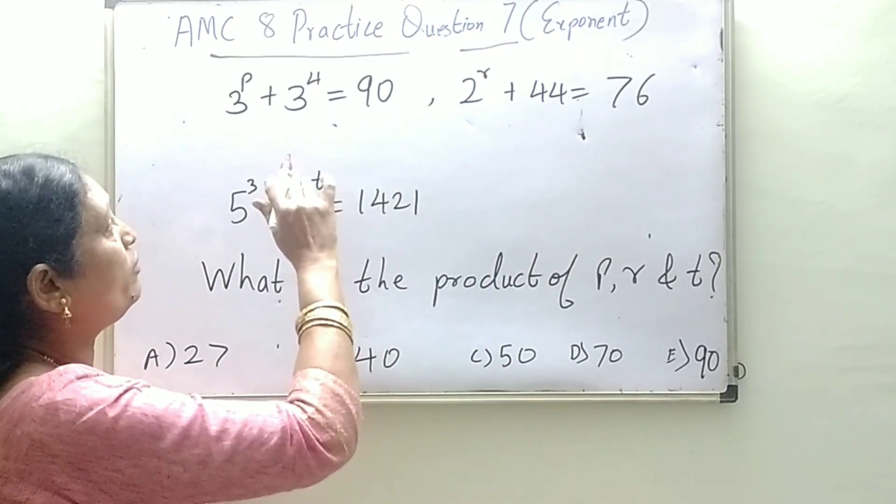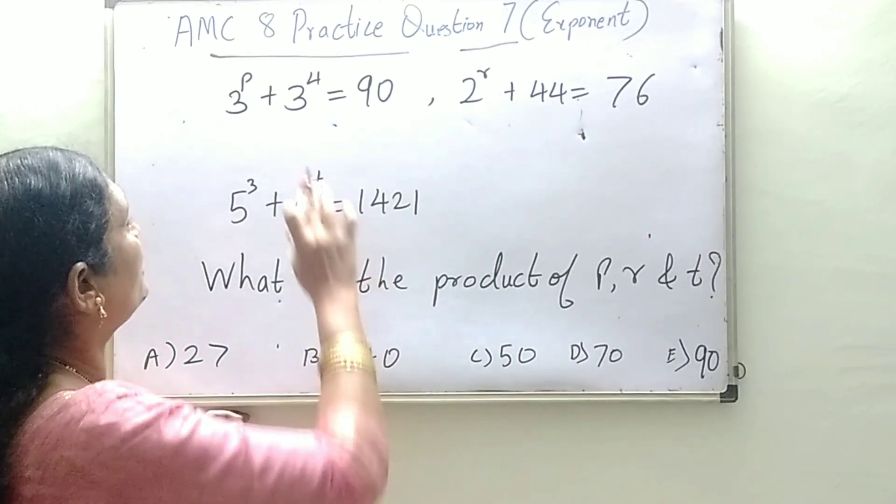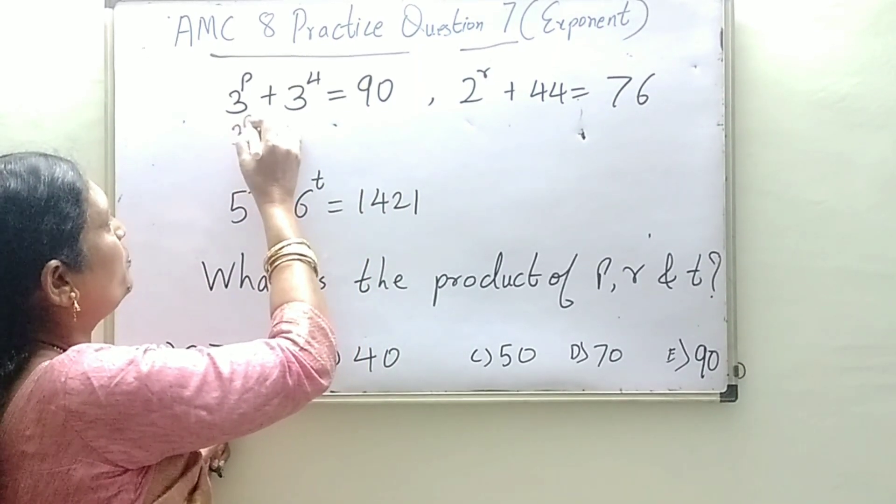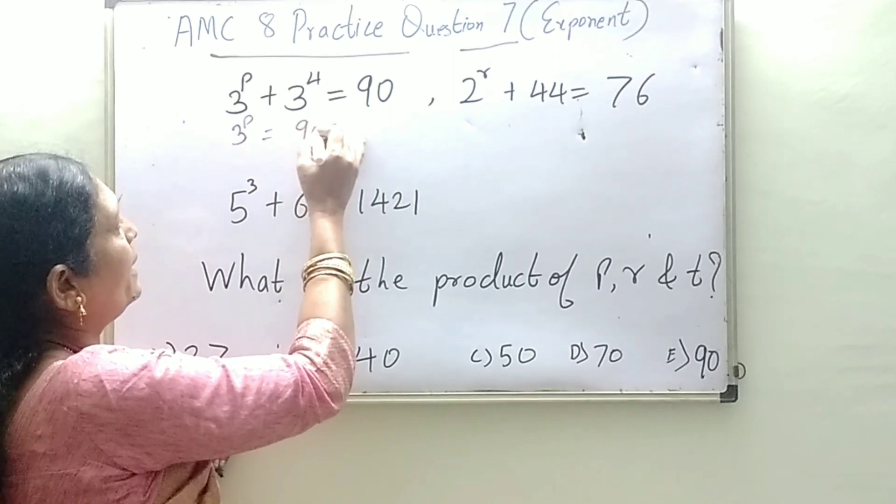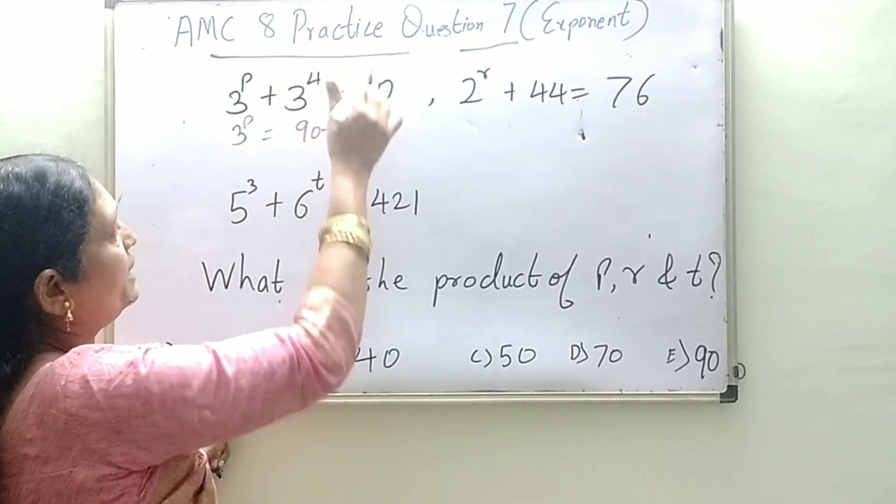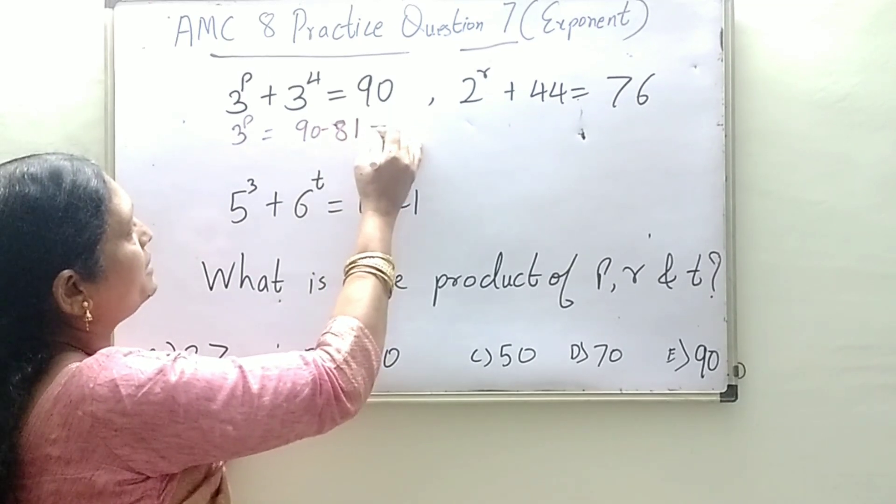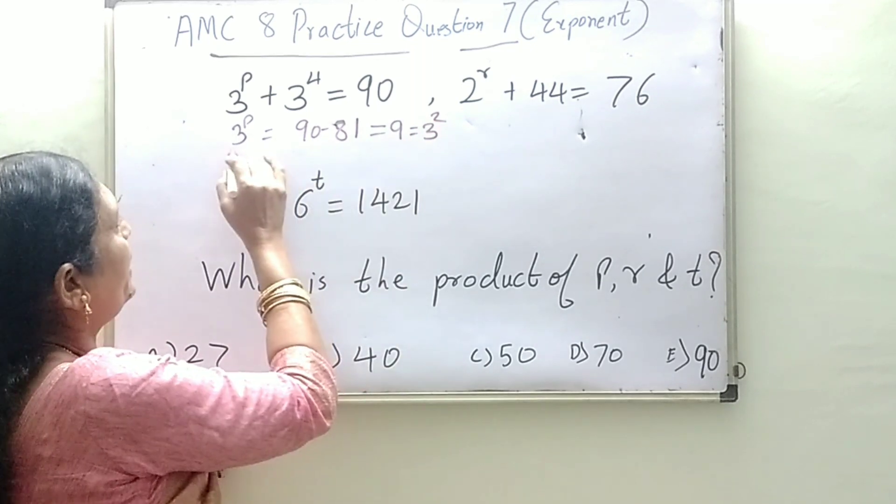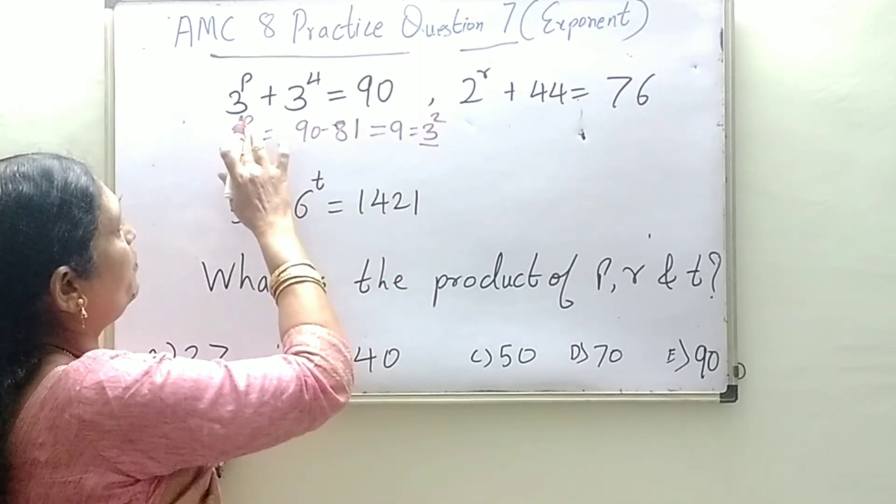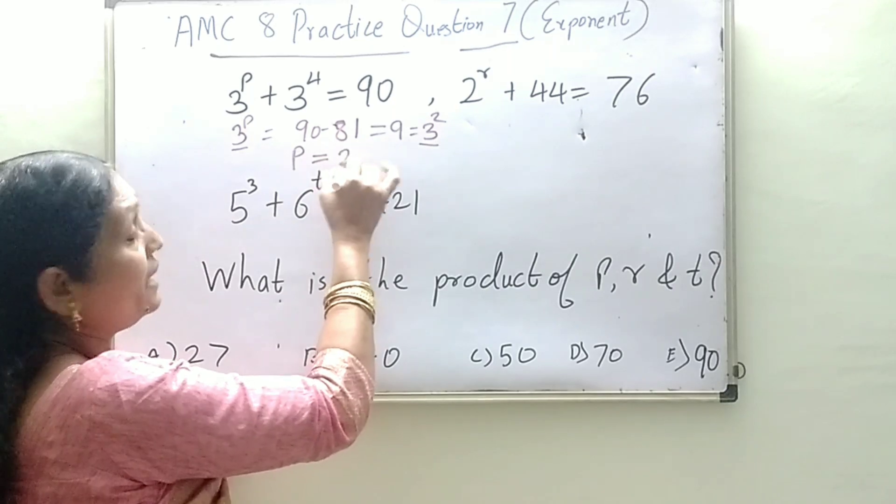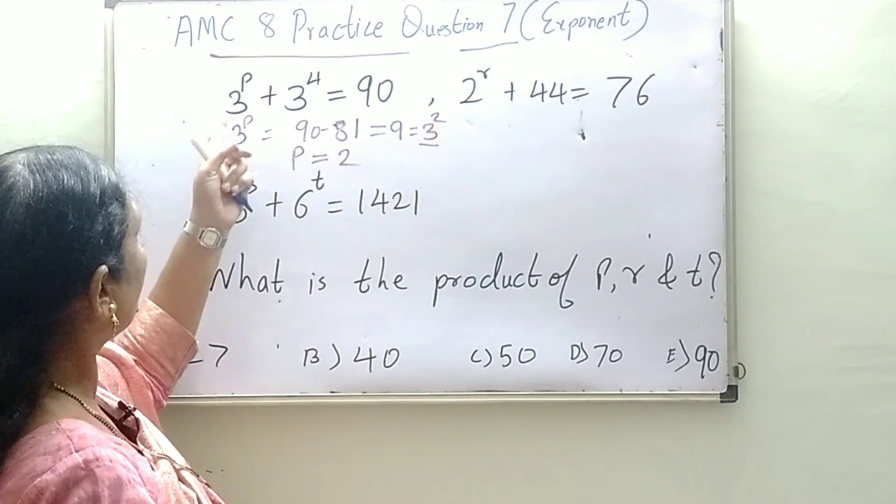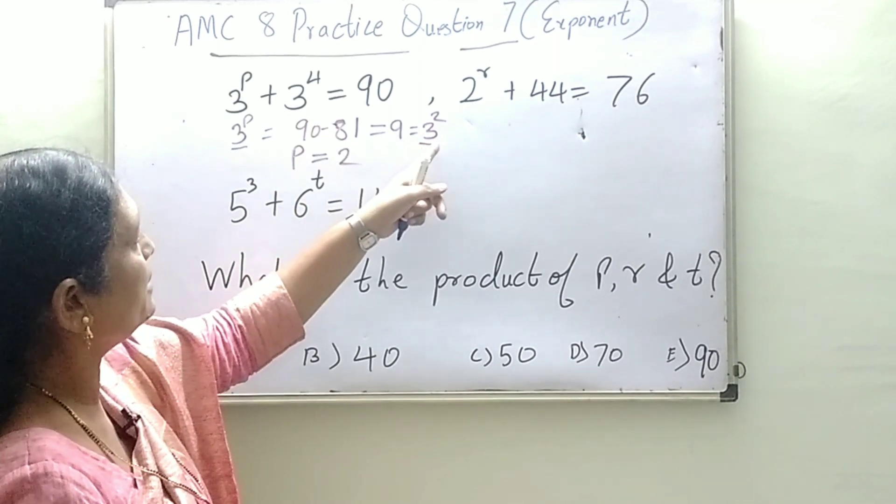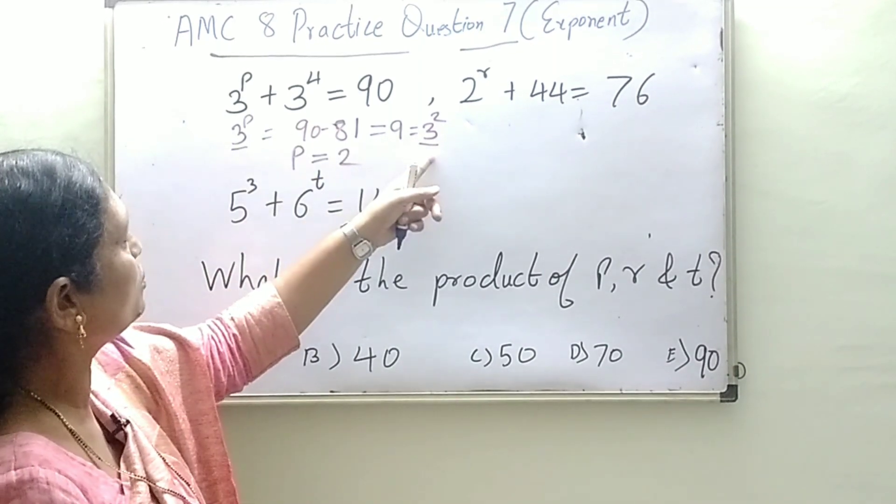We need to find the values of p, r, and t. Now 3 raise to 4 is 3 multiplied 4 times which is 81, so you get 3 raise to p is equal to 90 minus 81, which is 9. And 9 is the square of 3. Comparing the bases, when the bases are same we equate the powers, so we get the value of p as 2.